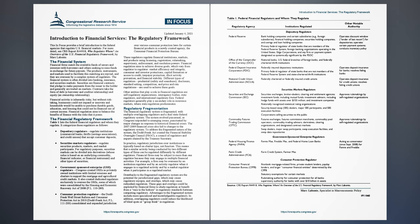Government-Sponsored Enterprise Regulators — Federal Housing Finance Agency (FHFA): regulates Fannie Mae, Freddie Mac, and Federal Home Loan Banks, and has been acting as conservator for Fannie and Freddie since September 2008. Farm Credit Administration (FCA): regulates the Farm Credit System and Farmer Mac.